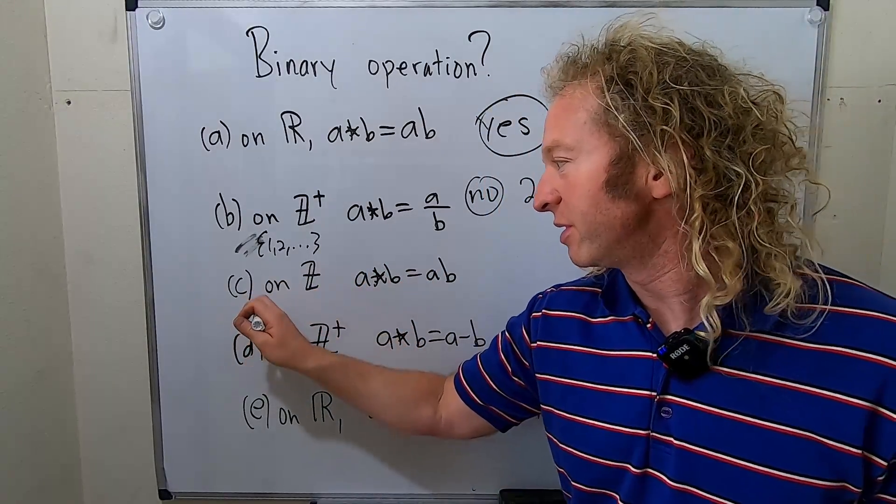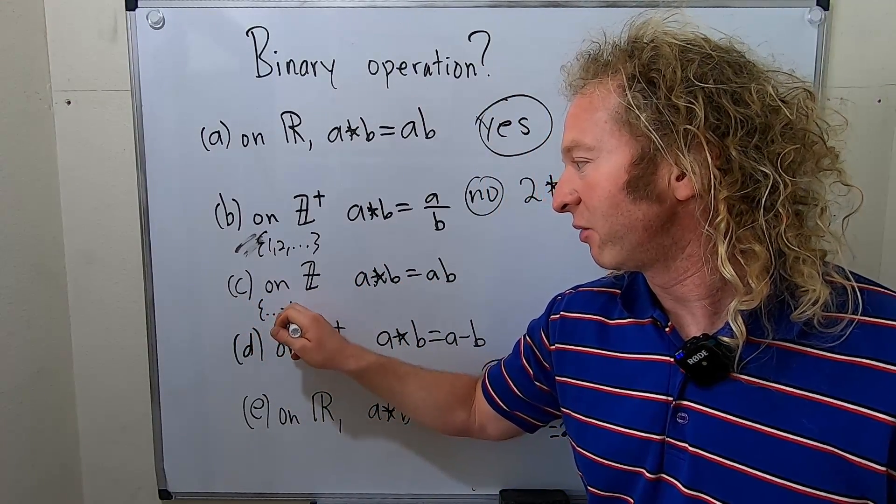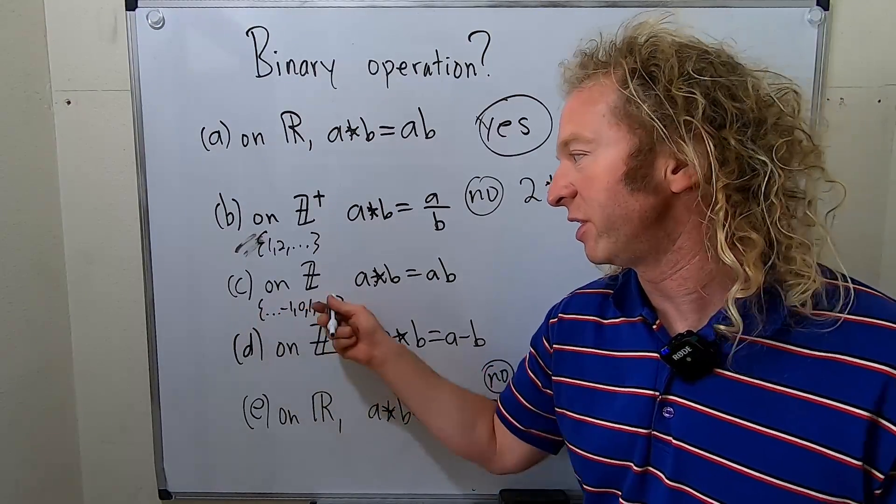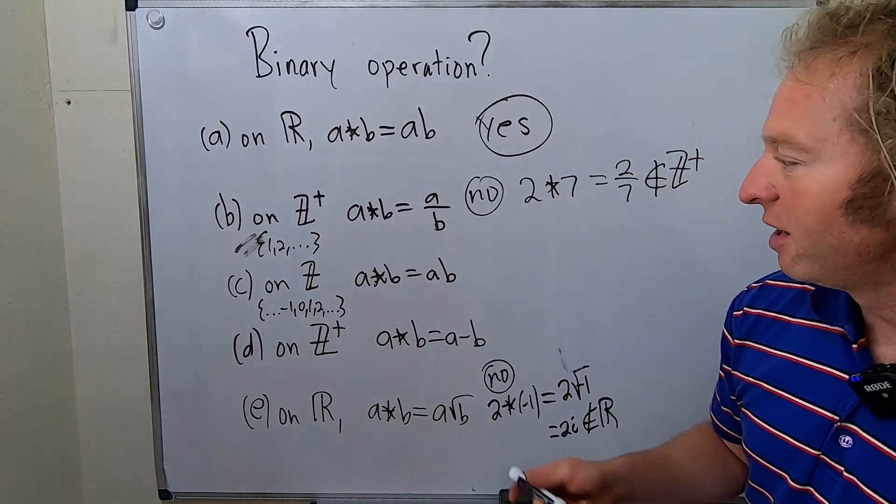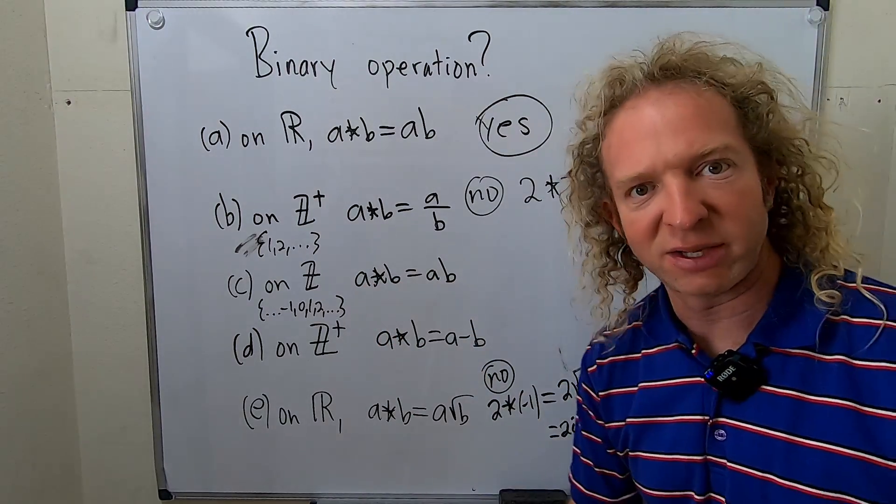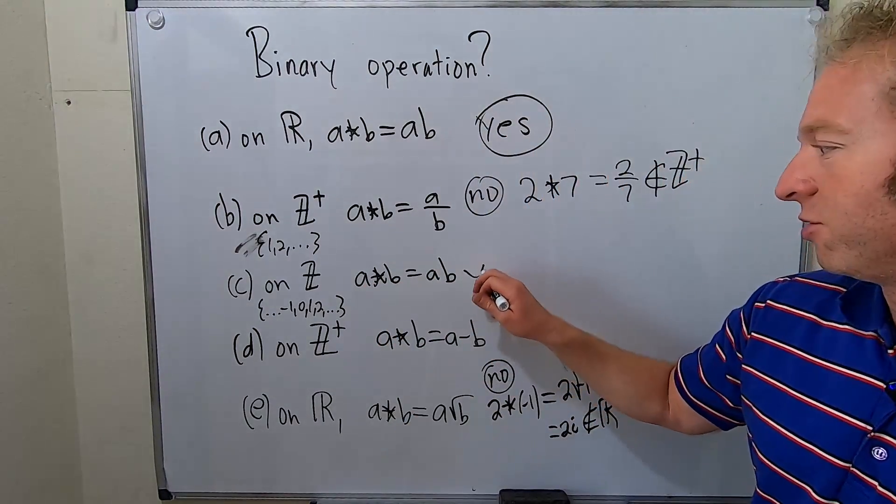This is all integers. So this is like dot dot dot, negative one, zero, one, two, dot dot dot. This is all the integers. That's what this set means. So if you take any two integers and you multiply them, do you get an integer? Yes.